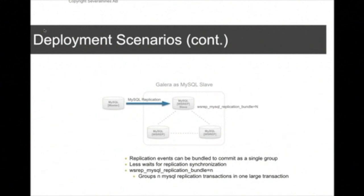So another way to deploy Galera cluster is to use Galera as a MySQL slave, basically. So here you have a standalone MySQL server which replicates into the Galera cluster. And the performance here, if you compare a regular MySQL master and slave replication setup, it's gonna be a bit slower because Galera does its own replication. But what you can do to speed things up, at least with the Galera 3 version, is that you can batch a number of replication events into one single batch. And that will increase the throughput of the replication.